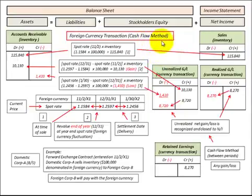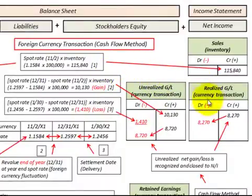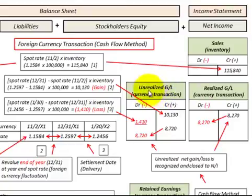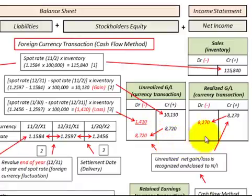Here we're going to look at the cash flow method for foreign currency transactions. The cash flow method uses the same procedures and calculations as the fair value method, with the exception of how we recognize any currency gains and losses. With the fair value method, we recognize those gains and losses immediately as a realized gain or loss as part of net income. With the cash flow method, we recognize those gains and losses as unrealized gains and losses. They're held in an account under stockholders' equity on the balance sheet, accumulated until the settlement date or delivery date. For example, the $10,130 year-end gain — we would credit this unrealized gain and loss account for that amount.